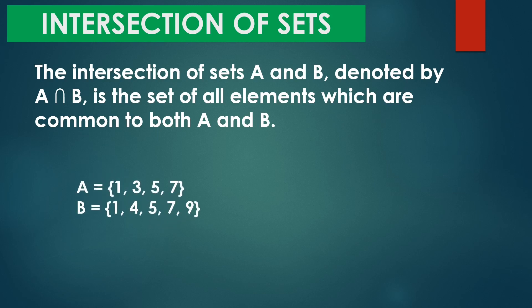Example: set A is equal to {1, 3, 5, 7} and set B is equal to {1, 4, 5, 7, 9}. So titingnan lang natin yung common elements ni A at B. Ano daw sila? 1, 5, 7. Therefore, A intersection B is equal to {1, 5, 7}.